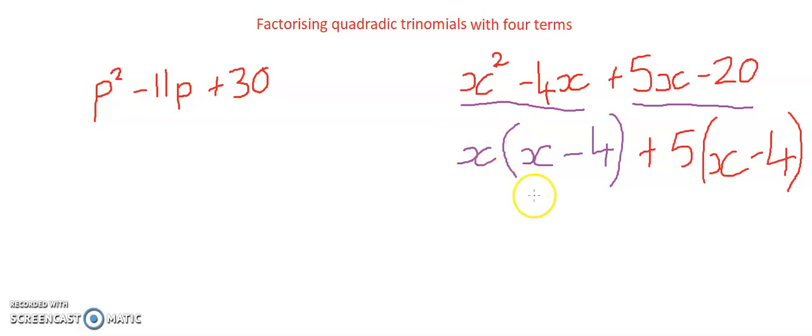That means I have a common factor again and I can factor that out and that leaves me with x plus 5 both of them multiplying with x minus 4.